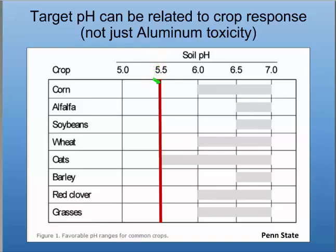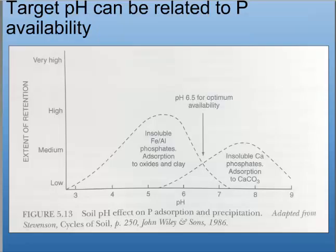Target pH relates to crop response. If you only pushed pH to 5.5 to eliminate aluminum, you might miss the best ranges for crops like corn and alfalfa, which likes an even higher pH. Alfalfa makes its own nitrogen through a symbiotic relationship with bacteria, and those microbes prefer a pH of 6.5 to 7. Soybeans are similar. Oats can tolerate a much lower pH. So getting above 5.5 isn't always enough — you might miss the best range for all these crops.